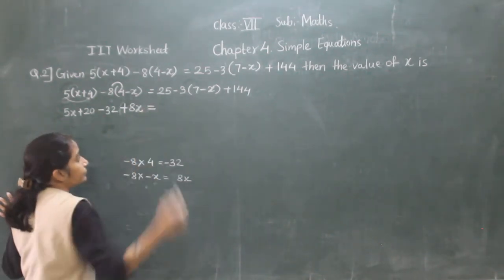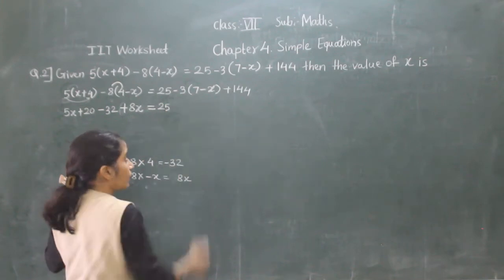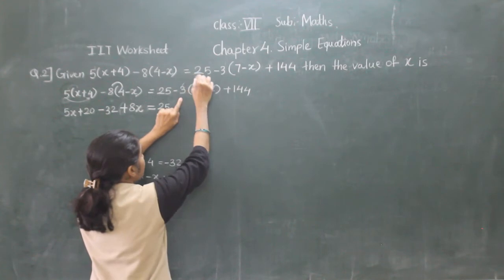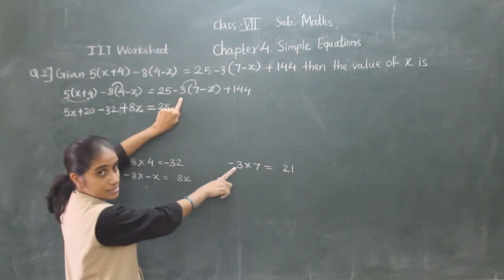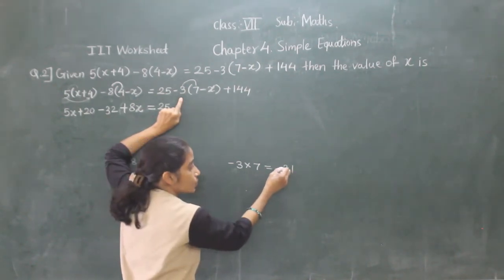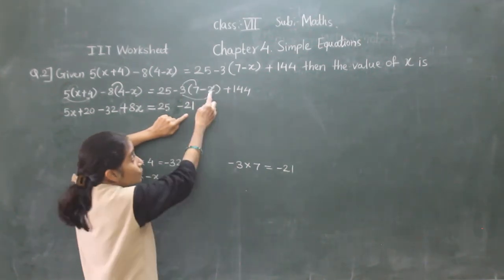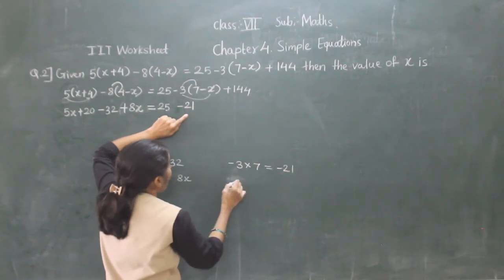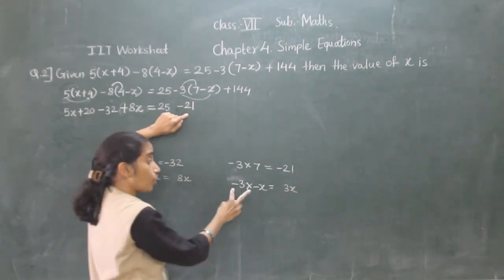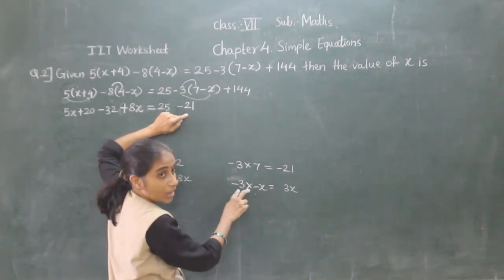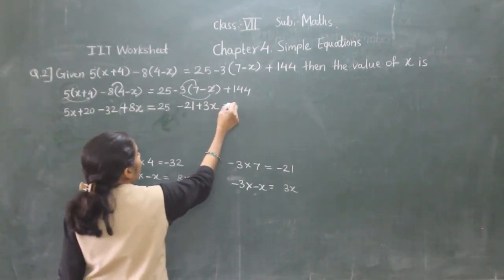Is equal to: write 25 as it is. Now minus 3 multiplied by 7: 3 sevens are 21, one number is negative and another positive, so the product is negative — minus 21. Now minus 3 into minus x: both numbers are negative so the product is positive — plus 3x, plus 144.